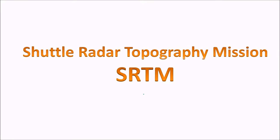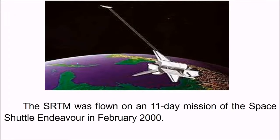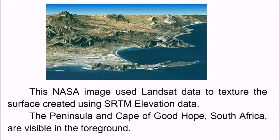Shuttle Radar Topography Mission, or SRTM. This is the SRTM Shaded Relief Anaglyph of the Zagros Mountains. The SRTM mission was flown on an 11-day mission from 11–22 February 2000 aboard the Space Shuttle Endeavour. This NASA image used Landsat data to texture — that is, to drape the surface — created using the SRTM elevation data. Now let me introduce SRTM as an elevation data source.